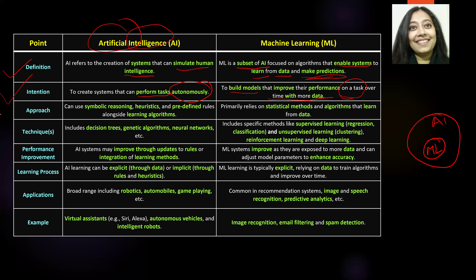Now let us look at the approach. The approach for AI is symbolic reasoning — we have heuristics, we have predefined rules, along with multiple learning algorithms. Heuristics is a simulation of human behavior. As humans, a lot of the time we make a decision in a specific amount of time, and that decision may not be the best decision, but it is a workable solution or a workaround. Heuristics is very similar — AI is programmed to come up with a solution in a specific amount of time. The solution may not be the best, but it is a workable solution or a workaround.